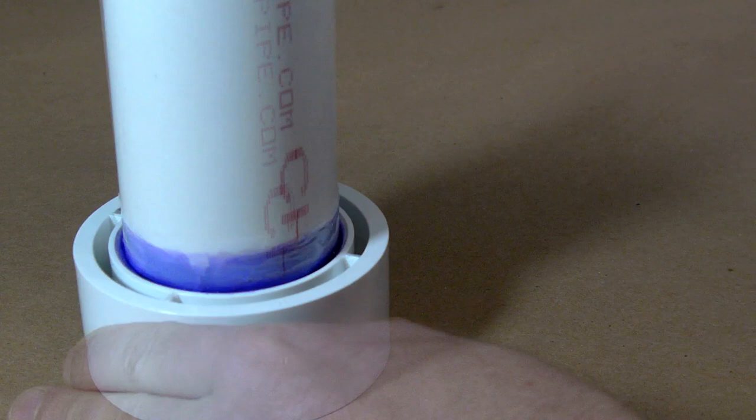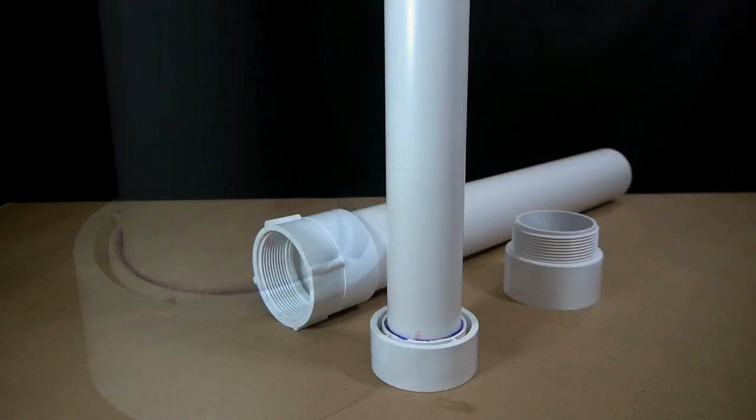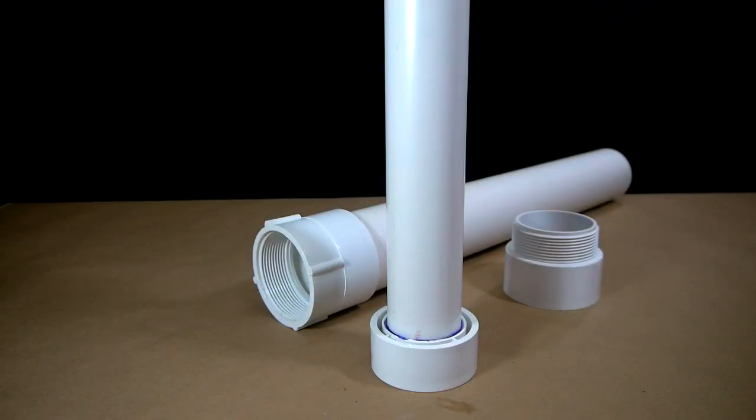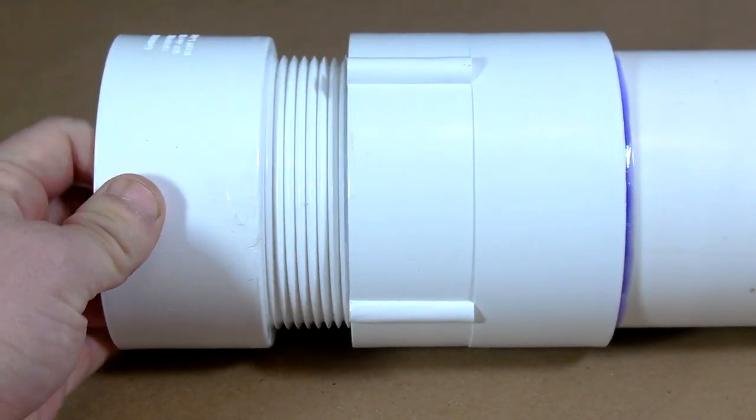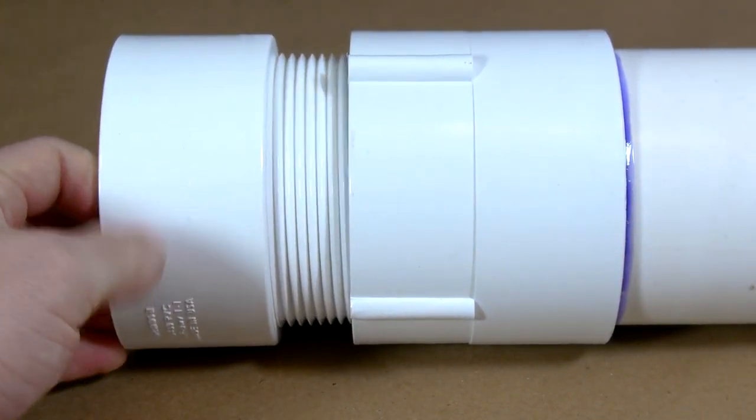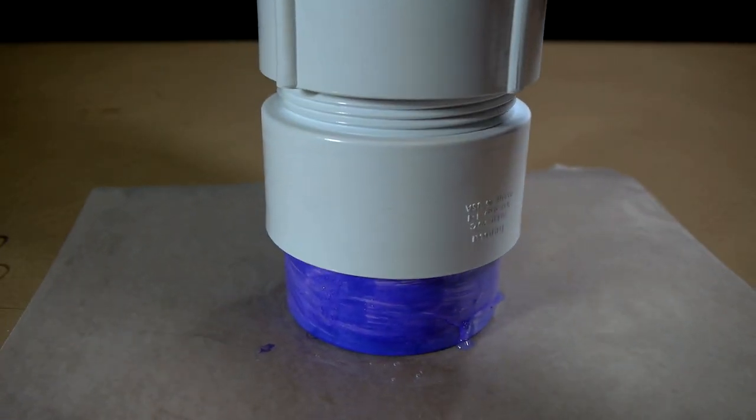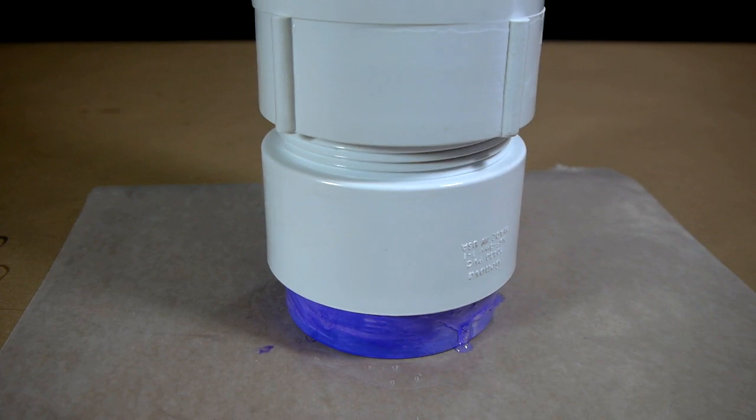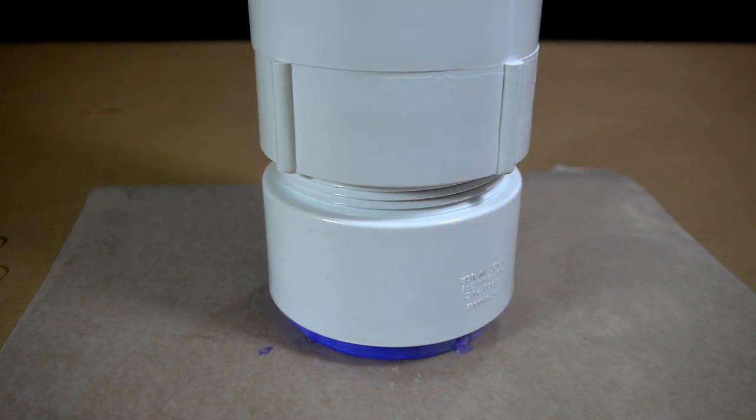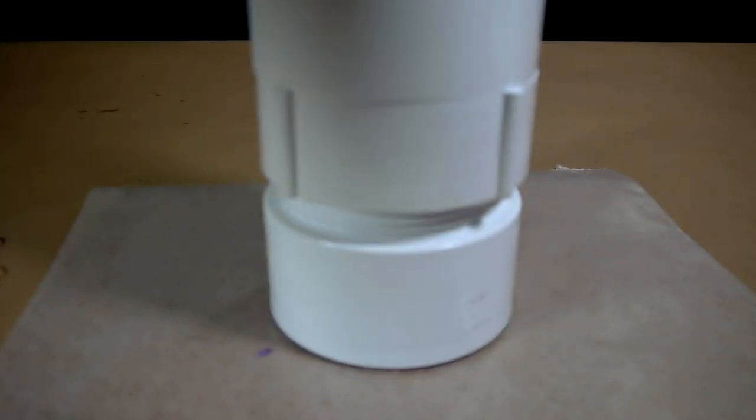Once the glue is firm enough to hold the barrel in place, the reducer is prepared with more primer to be cemented into a male threaded fitting, which can be screwed into the female fitting already on the chamber. As with the previous fittings and all following, plenty of primer and cement should be used on both surfaces and they should be pressed together quickly before the glue has time to set.